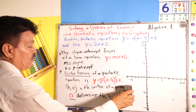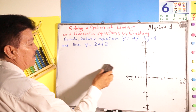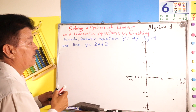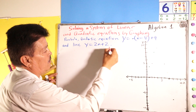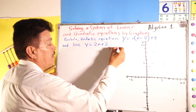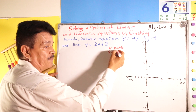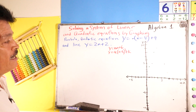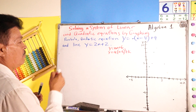With this information, we are able to graph the solution for this system of equations. The two important formulas we will work with are: y equals mx plus b, and y equals a times (x minus h) squared plus k. Now let's solve our problem step by step.